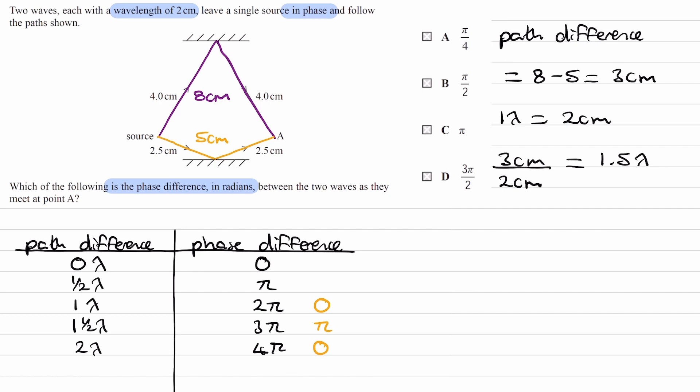So if your path difference is a whole number of wavelengths, then your phase difference can always just be expressed as 0. Because whether the path difference is 1 lambda, 0 lambda, 10 lambda, 1000 lambda, it makes no difference.